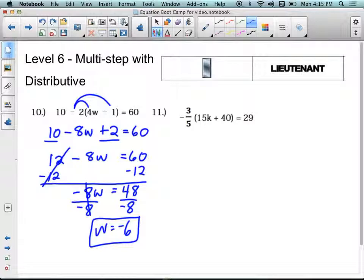Now let's take a look at 11. This one has a fraction. Don't be alarmed. Negative 3 fifths times 15. Feel free to pause if you want to use your graphing calculator. Negative 3 fifths times 15 is negative 9k. And then negative 3 fifths times 40. Negative 3 fifths times 40 is negative 24.